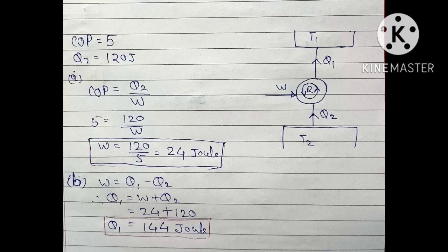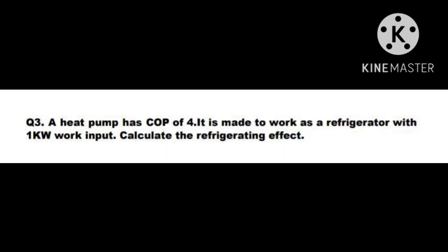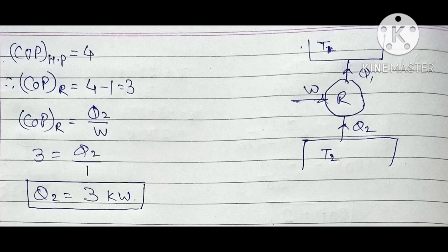Question number 3: A heat pump has a COP of 4 and is made to work as a refrigerator with 1 kW work input. Calculate the refrigerating effect, i.e., find Q2. When a heat pump with COP 4 works as a refrigerator, the COP of the refrigerator will be 4 - 1 = 3. Applying COP = Q2 / W gives 3 = Q2 / 1, so Q2 = 3 kW.